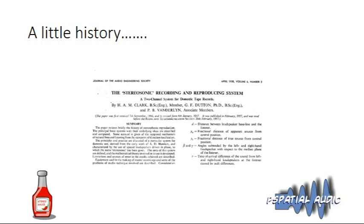With Blumlein's death, it fell to his team to develop the commercial stereo system at the end of the 1950s. That team included Clark, Dutton, and Vanderlyn, and they wrote a very famous paper called 'The Stereosonic Recording and Reproducing System,' which set the theoretical background and explained in detail how a full stereo system from microphone to microgroove recording would work.